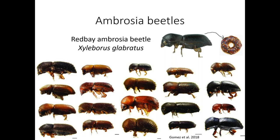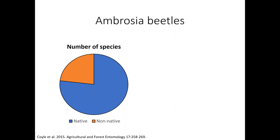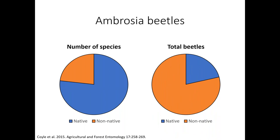Ambrosia beetles are a good group to illustrate invasion dynamics. In a study we did in South Carolina, we caught almost 50 species and over three-quarters were native — that sounds great. But if you look at the actual number of individual insects, it was pretty much the opposite. Just a few non-native invasive species of ambrosia beetles dominated the entire ambrosia beetle fauna. This is not uncommon for invasives in general: a few individual species account for the bulk of the total population.